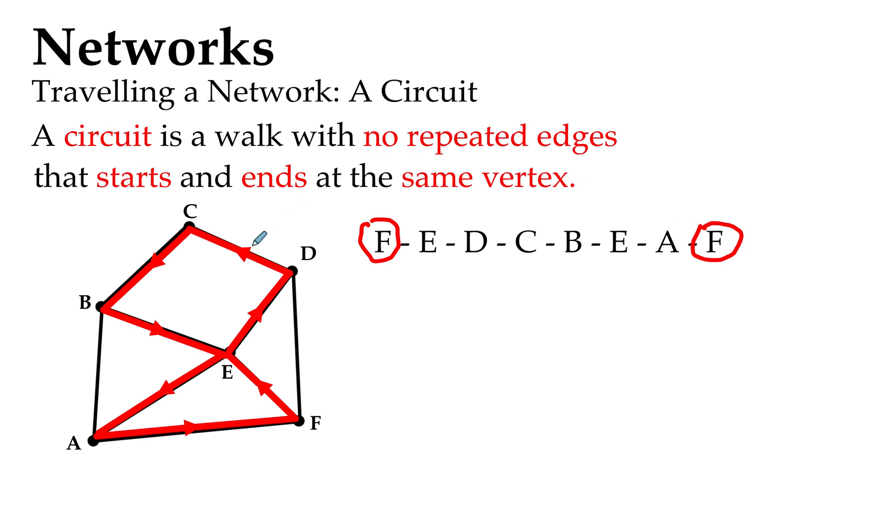And we haven't repeated any edges. We haven't doubled up on any of the edges. Now those of you who are sharp might notice that we have repeated E, the vertex E twice. But that's not a problem for a circuit. We just have ticked off all the definitions here. We haven't repeated any edges, and we've started and ended at the same vertex, that vertex at F. So I've fulfilled in our diagram here all the conditions for a circuit.